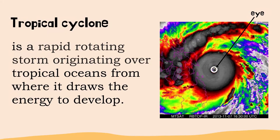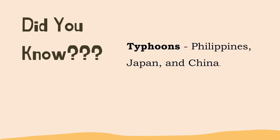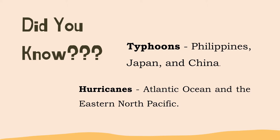Did you know? In the Philippines, Japan, and China, tropical cyclones are known as typhoons. Meanwhile, in the North Atlantic Ocean and eastern North Pacific, they are called hurricanes.